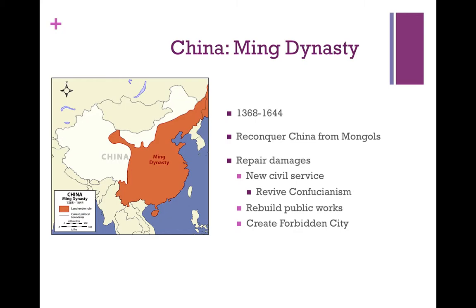Obviously they don't successfully do that, but they do their best. They do this by repairing any of the damage that the Yuan dynasty caused — they repair the public works, bring agriculture back up to speed, and rebuild the canals and dikes and everything else needed to get China running again smoothly at high efficiency.